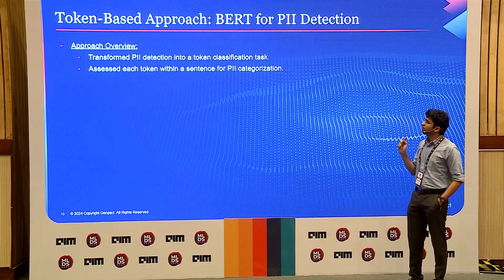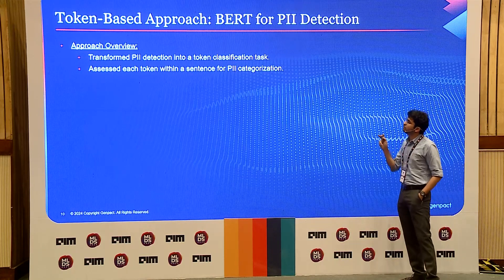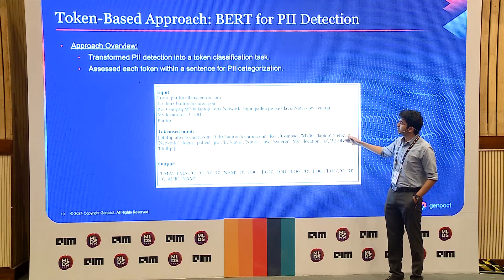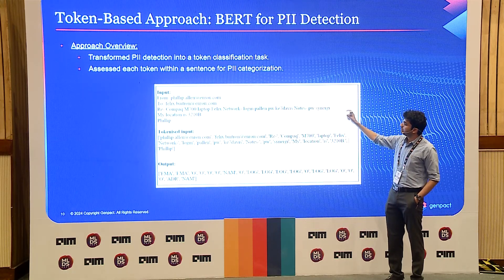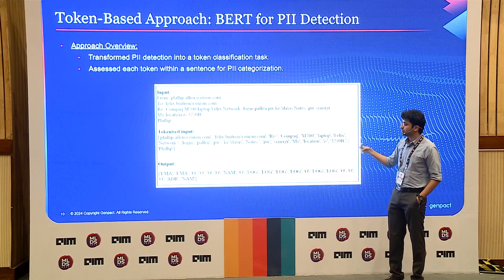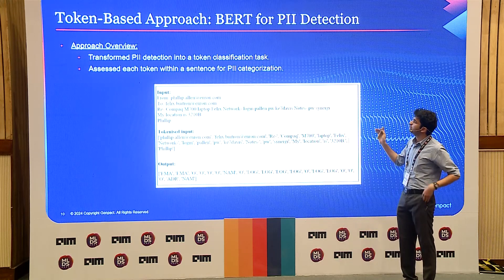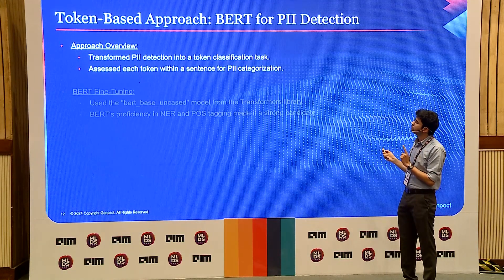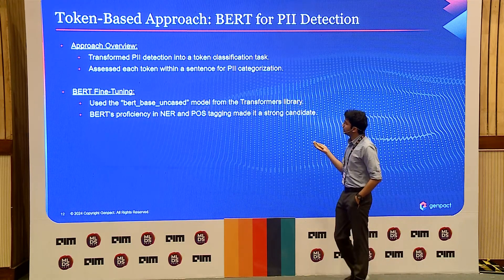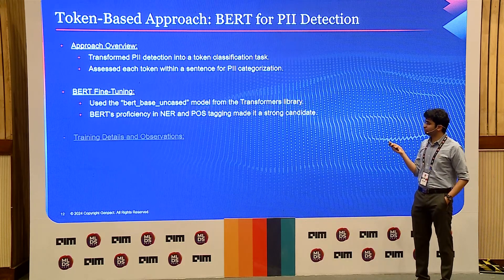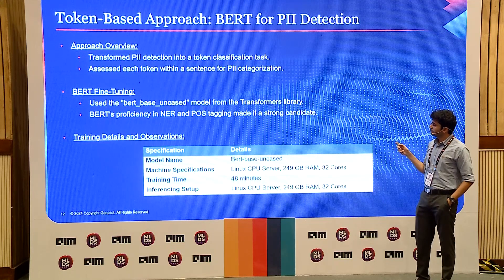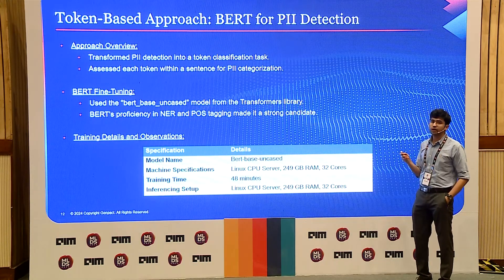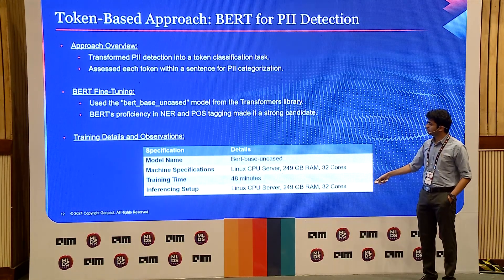Next we go to BERT for PII detection. The overall approach is that we transform the PII detection problem into a token classification task. We create a list of strings from each mail, and each word is either a category of PII or it's an outside label which is not PII. We chose BERT for this because BERT-base uncased has been here for a very long time — it's very good at NER and POS tagging. And a great advantage: no GPU required for fine-tuning or inferencing. The same CPU server setup was used for both training and inferencing.